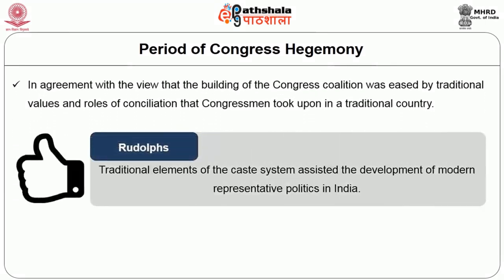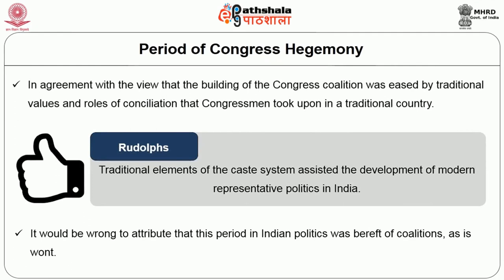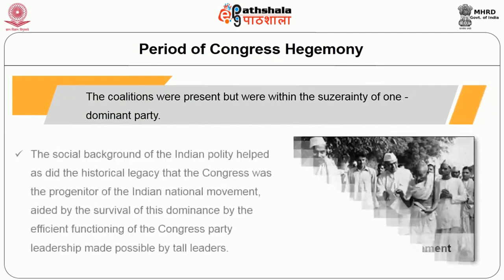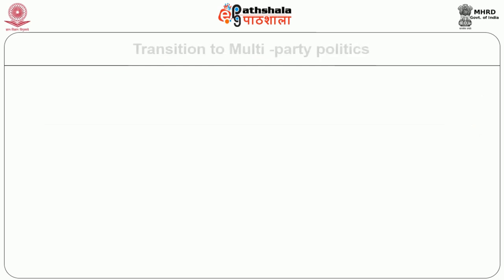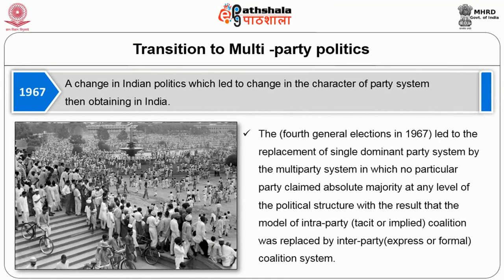Rudolph also talked about how traditional elements of the caste system assisted the development of modern representative politics in India, and Congress was very smart in politicizing identity politics. The politicization of caste is something argued by Rajni Kothari. It would be wrong to say that there was no coalition during this period — the coalition was present within the one dominant party. Congress itself was an umbrella, coalitional party in which people of different ideological persuasions came together.